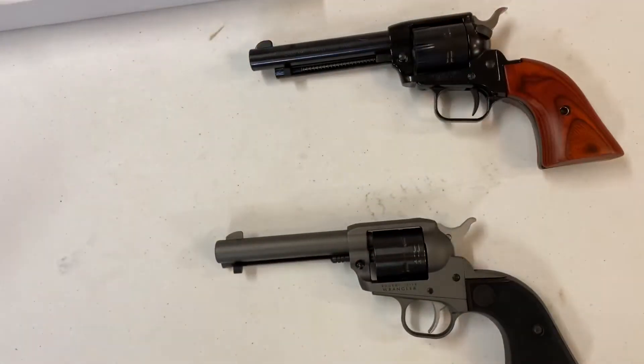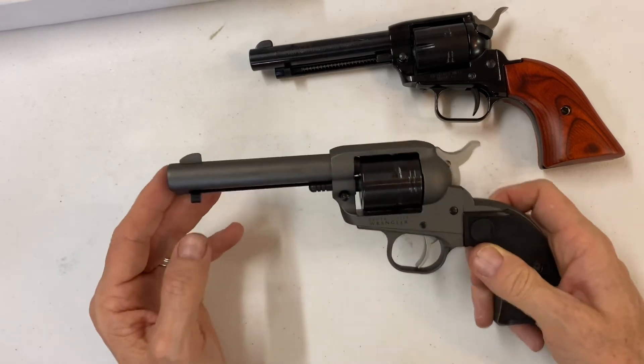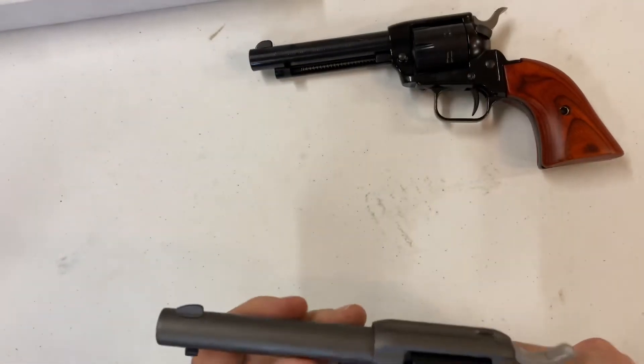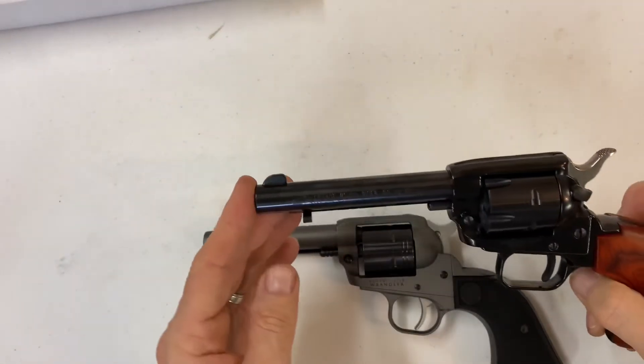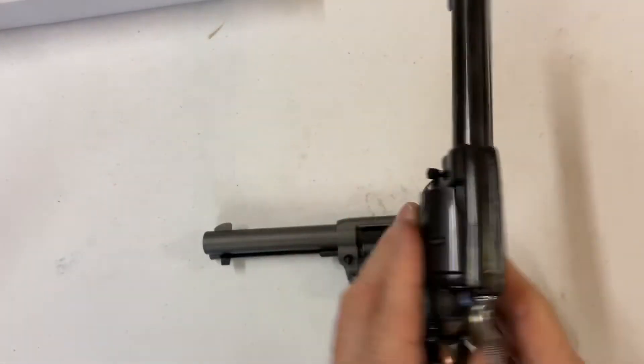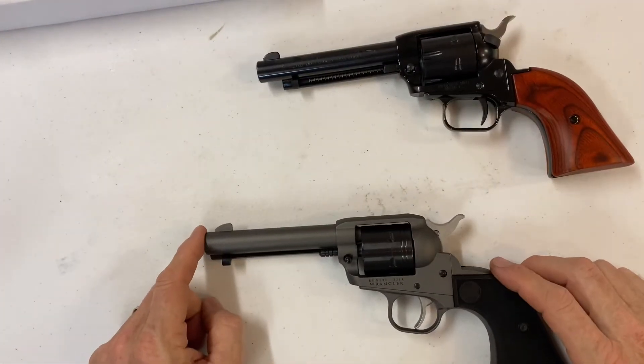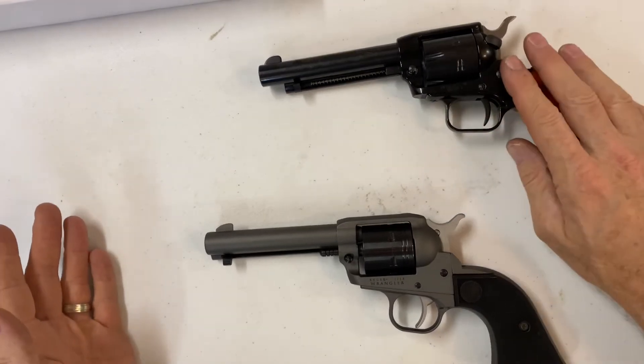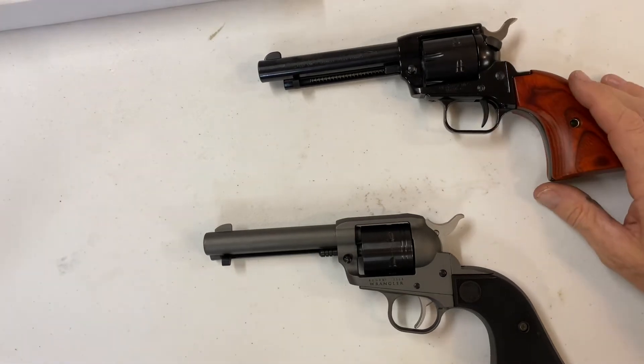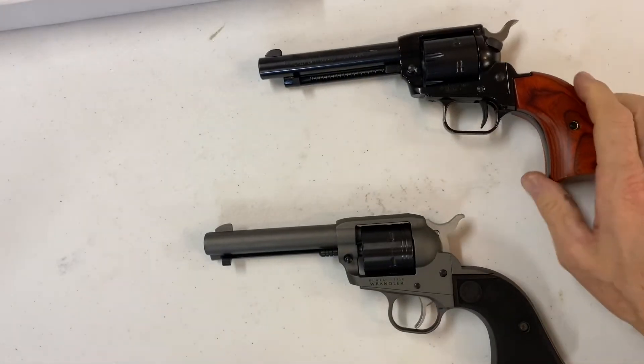I think the pro on the Wrangler is build quality. Build quality is pretty darn good. Roughrider, I mean it's not horrible, but compared to this one, it's not as good. Also, on the Wrangler, like I said before, you can get this in multiple colors. Roughrider, basically you're getting it black and maybe some case-hardened color.